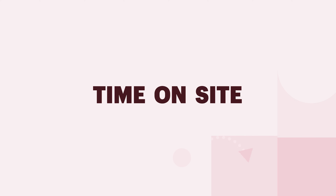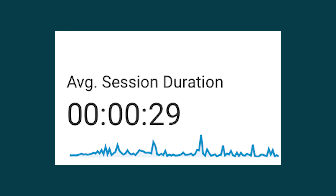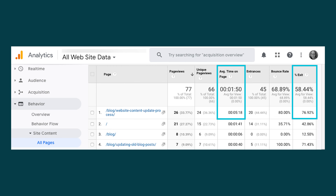Time on site will be the average amount of time that users are spending on your site per visit. How much time is going to depend on what you're selling, but in general, if people are spending time on your site, that is showing that they're having a good experience. According to our research, anything more than 120 seconds is great.